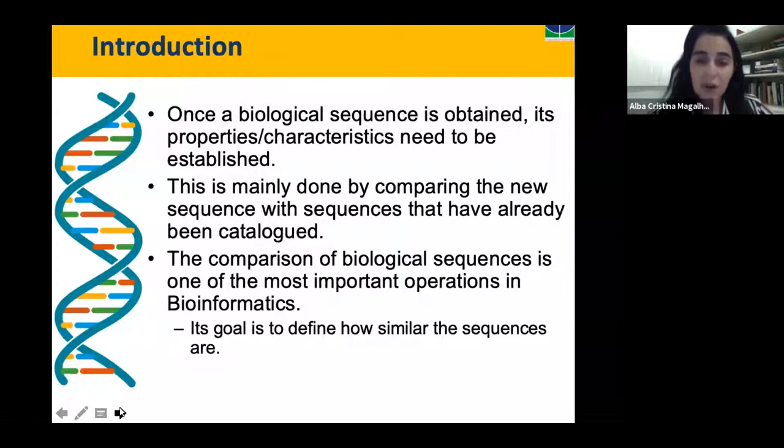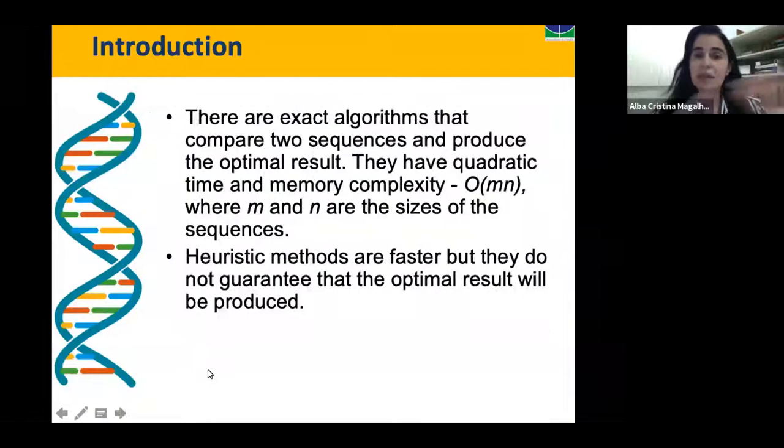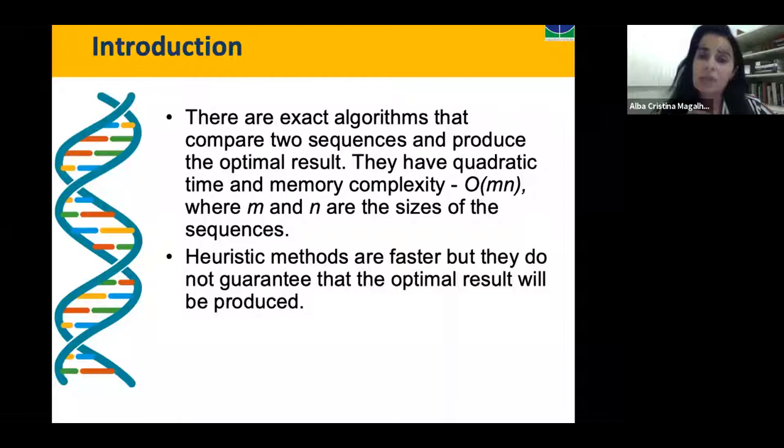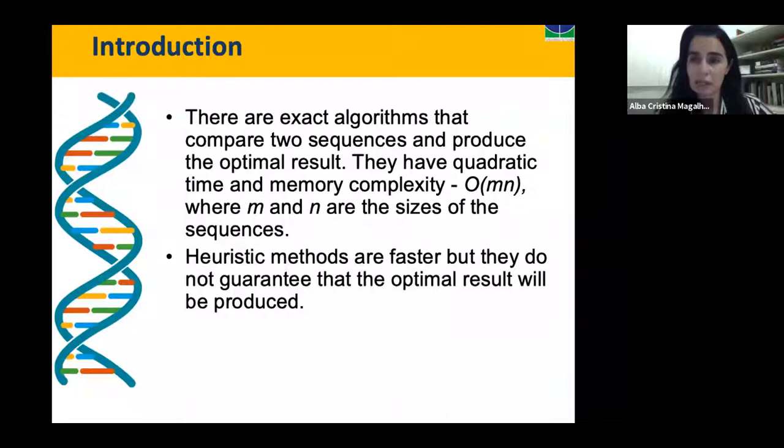In the literature, there are exact algorithms that compare two sequences and produce the optimal result. These algorithms have quadratic time and memory complexity, which depend on the sizes of the sequences. There are also heuristic methods which are faster, but they do not guarantee the optimal result. Here in this talk, we are talking about optimal results — exact algorithms.